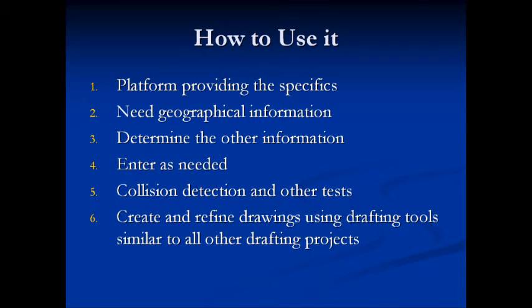You determine whatever other information is needed and enter it as you go through designing the building. When you're finished, you can run a part of the software called collision detection, so you can see if you have a beam intersecting a glass window, for example, and then decide how you want to change that. After the model has been created based on all these various inputs, you would use the drafting tools of the software to create other project documents. That is the big picture overview of the process of using building information modeling in your building design project.